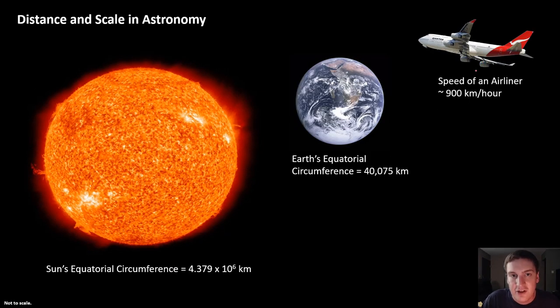So here's an interesting thought experiment to think about how truly big the Sun is compared to the Earth. If we took the speed of an airliner, and this is about the max speed of a normal airliner, 900 kilometers per hour, if we flew around the equator of the Earth, all the way around in circumference, how long would it take to fly around?